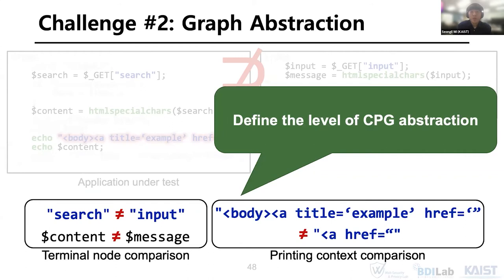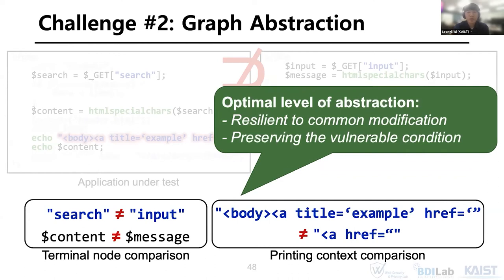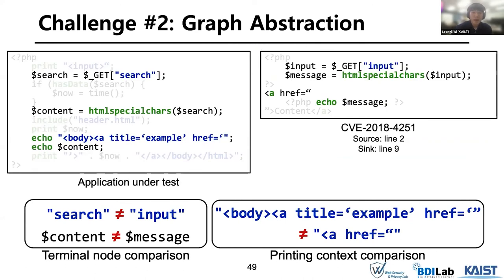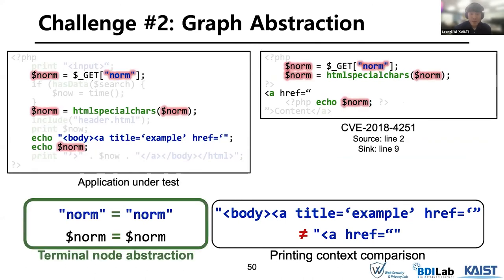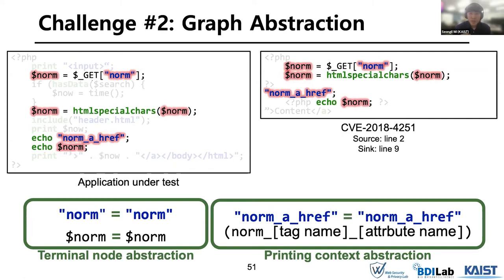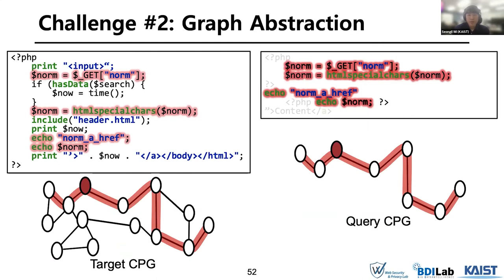We need a proper level of abstraction for CPGs to increase the accuracy in matching. To address this challenge, we defined the level of graph abstraction. There are two constraints to optimize abstraction: it should be tolerant to common modifications of the code, but also preserve the vulnerable condition. One of our graph abstraction techniques normalizes terminal nodes to a unified node. For nodes representing printing context, normalization is performed by combining the name of the opening tag and attribute. Through subgraph matching on the normalized graph, we can find vulnerabilities in more diverse patterns.